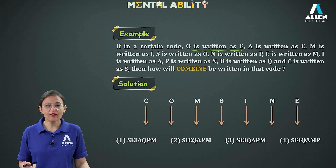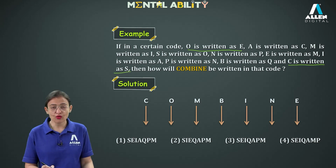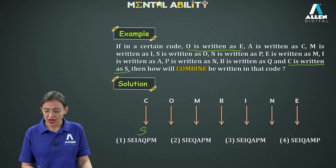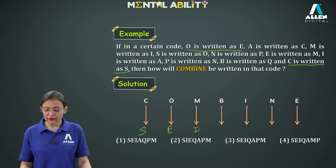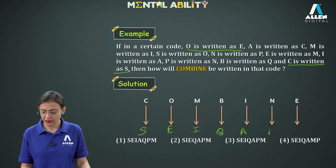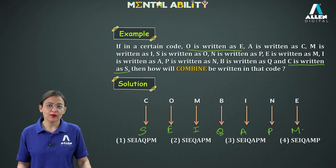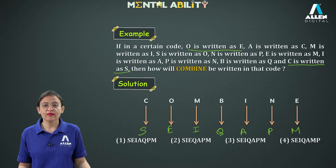We will now find the code for each letter of COMBINE. Code for C is S, code for O is E, code for M is I, code for B is Q, code for I is A, code for N is P, code for E is M. So the required code is SEIQAPM, and the third option is correct.